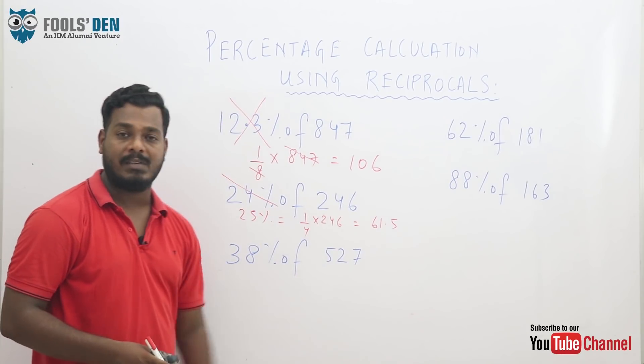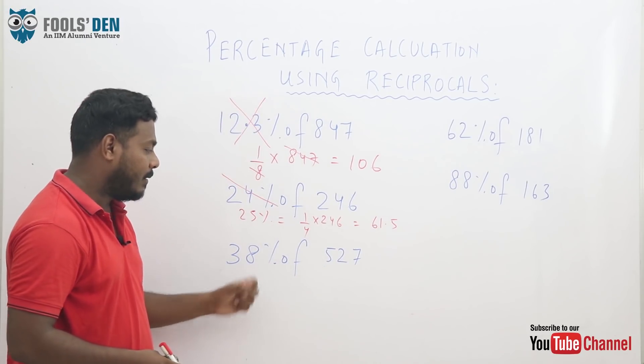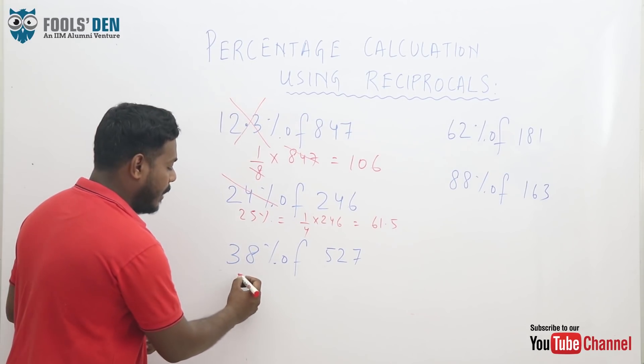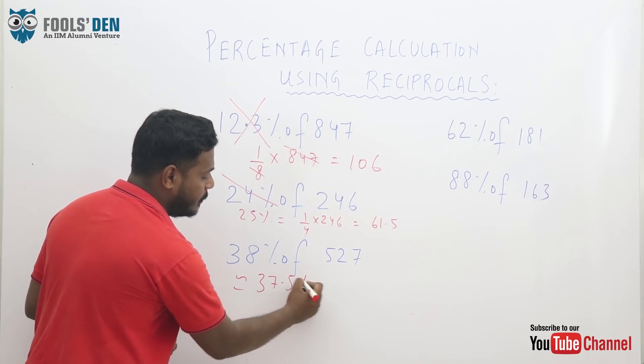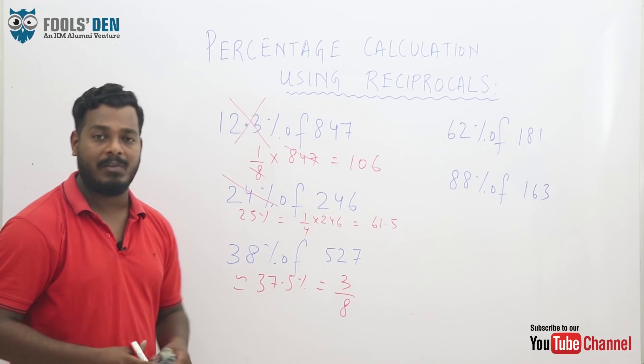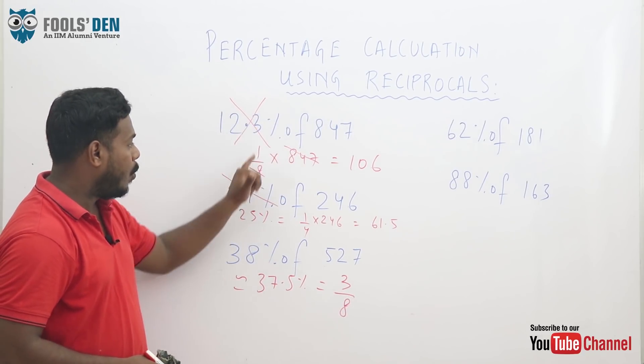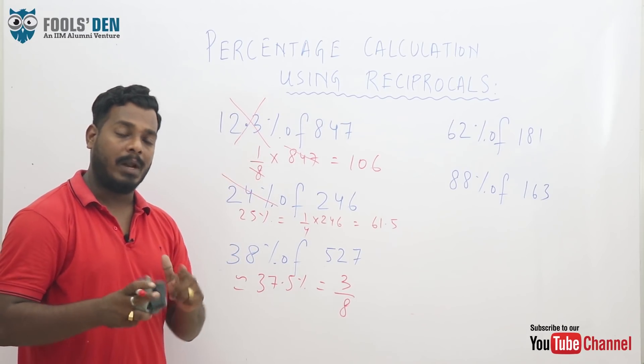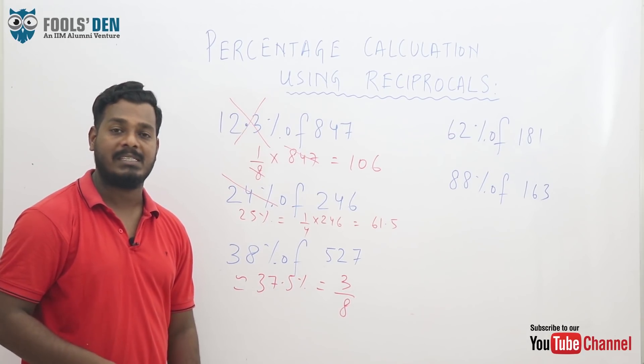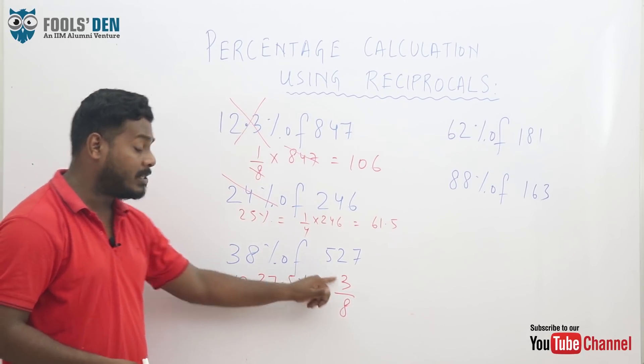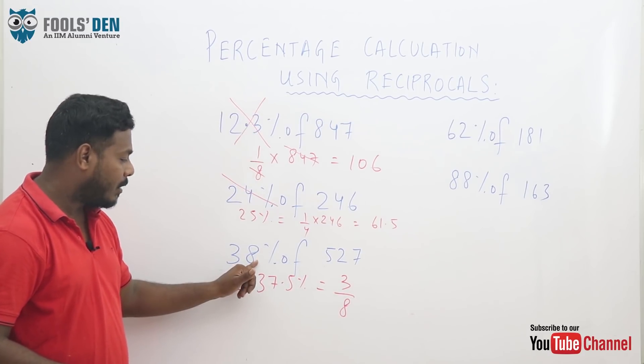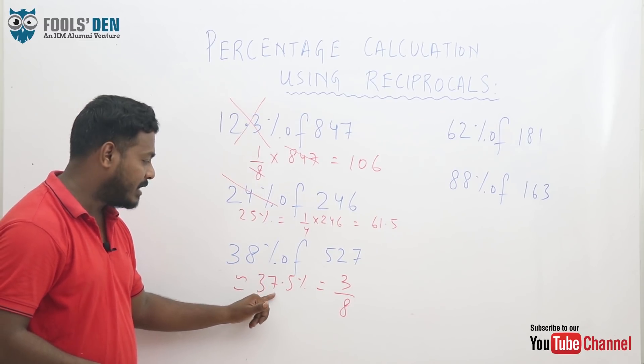Suppose 38% of 527. For 38, you need to be strong in the reciprocals concept again. 38 can be approximated to 37.5%, which is nothing but 3 by 8. How did I arrive at this? See, we know 1 by 8 is 12.5. So 1 by 8 times 3 is 3 by 8, and 12.5 times 3 is 37.5. So 37.5 is 3 by 8. This is a very important value you have to remember for the exams.